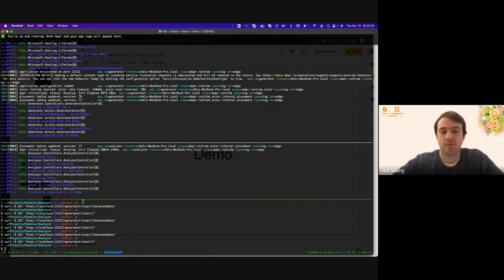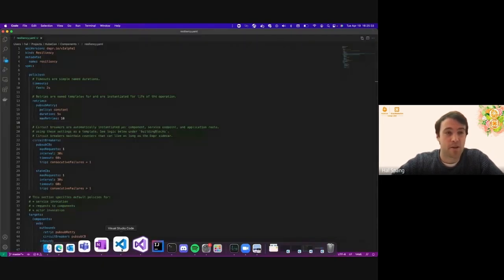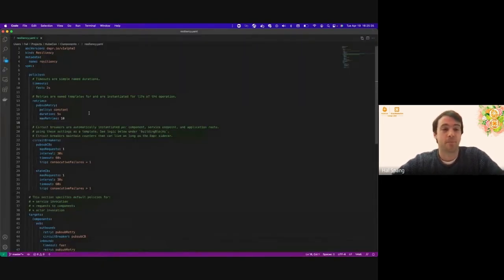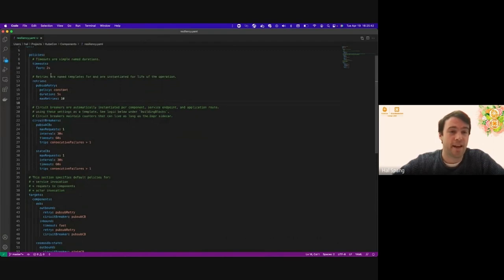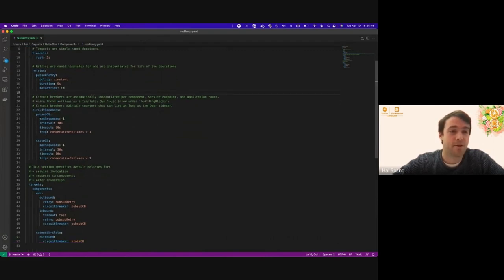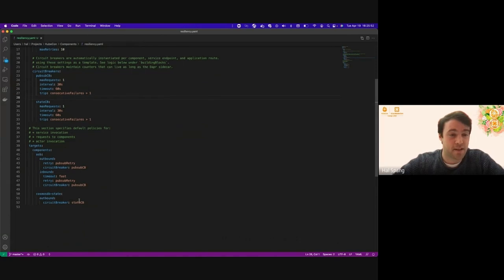So maybe something weird is happening with this application, but we can revisit it in just a moment because first I want to show off my resiliency policy. So it's going to look very similar to the one that we have in the slides. But what you can see here is I have a timeout, which is a fast timeout, a retry, and then I have some circuit breakers. The one we're interested in here is actually the state circuit breaker.